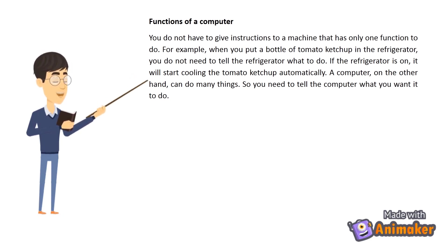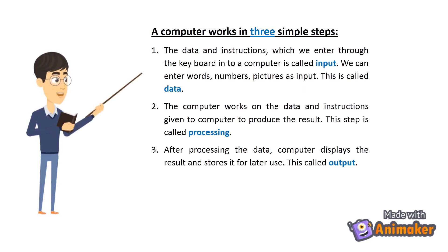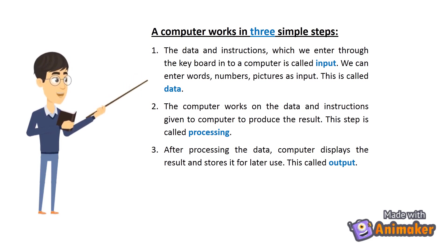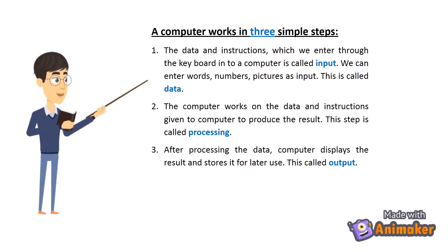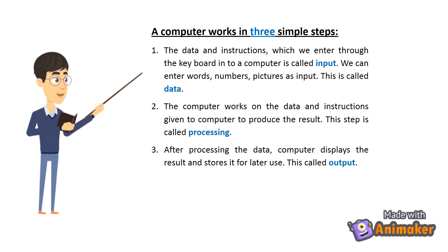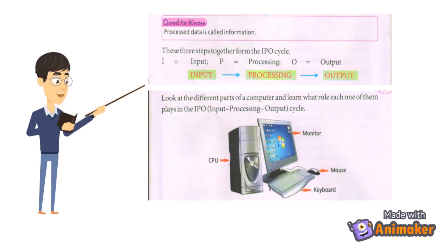So you need to tell the computer what you want it to do. A computer works in three simple steps. The data and instructions which we enter through the keyboard into a computer is called input. We can enter words, numbers, and pictures as input — this is called data. The computer works on the data and instructions given to it to produce the result; this step is called processing. After processing the data, the computer displays the result and stores it for later use — this is called output. These three steps together form the IPO cycle.